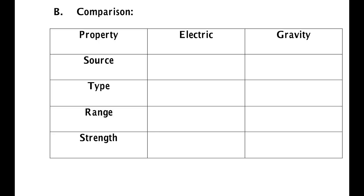By Newton's third law, the source of a force is also the object that experiences it, because you always have two objects. An object with charge applies an electric force to another object that has charge. The earth, because it has mass, applies a force to you because you have mass. You because you have mass also apply a force to the earth. So who is the source and who experiences it depends on the point of view. For the electric force the source is charge, and for gravity the source is mass.